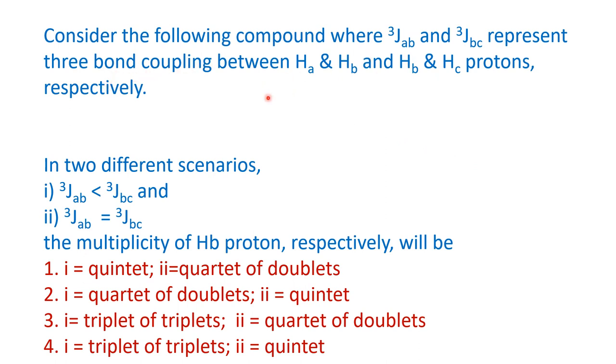The question is: consider the following compound where 3JAB and 3JBC represent three-bond couplings between HA and HB, and HB and HC protons respectively. In two different scenarios, one where JAB is less than JBC, and the second one is JAB equals JBC, the multiplicity of HB proton respectively will be.